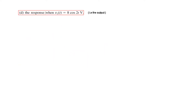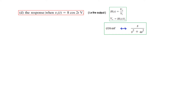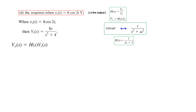Now for part D, the input is 8cos(2t). We follow the same technique: V_out(S) = H(S) · V_i(S). We convert V_in = 8cos(2t) to the S-domain using the formula for cosine: V_i(S) = 8S/(S² + 4). We already know H(S) = 1/(2S+3), so substituting both into the formula gives V_out(S) = [1/(2S+3)] · [8S/(S²+4)].